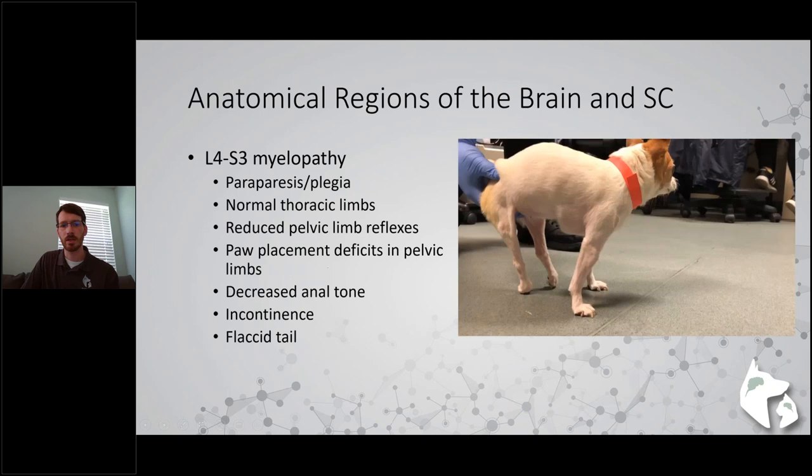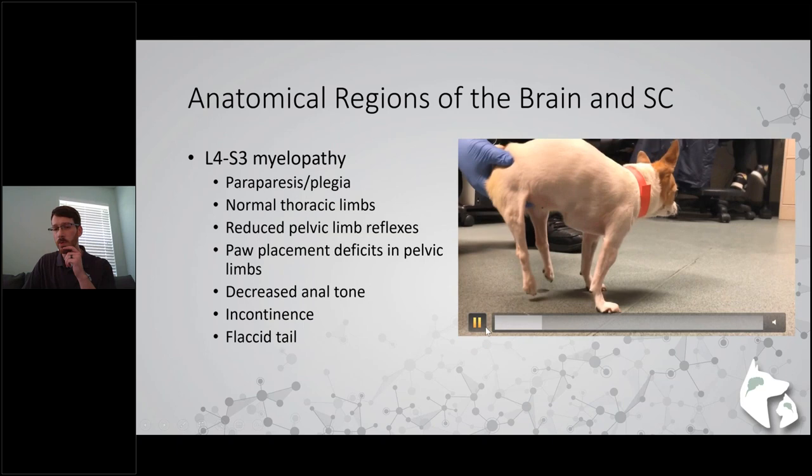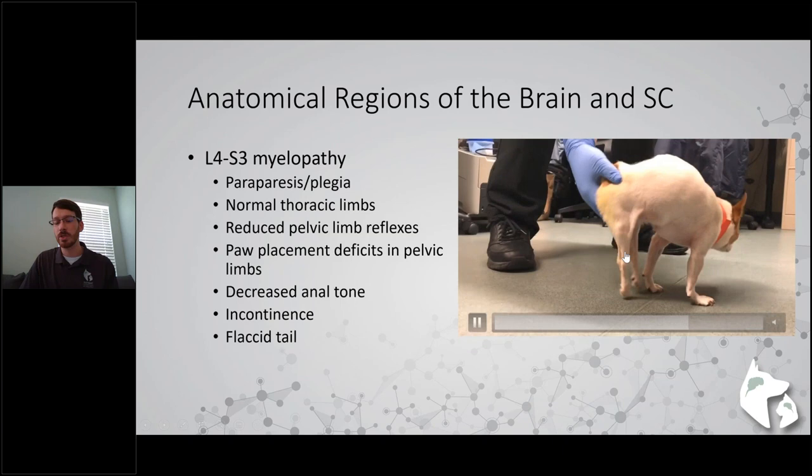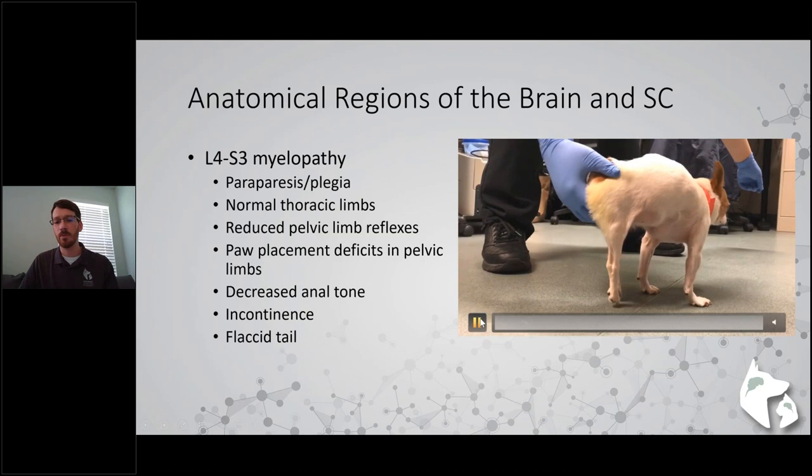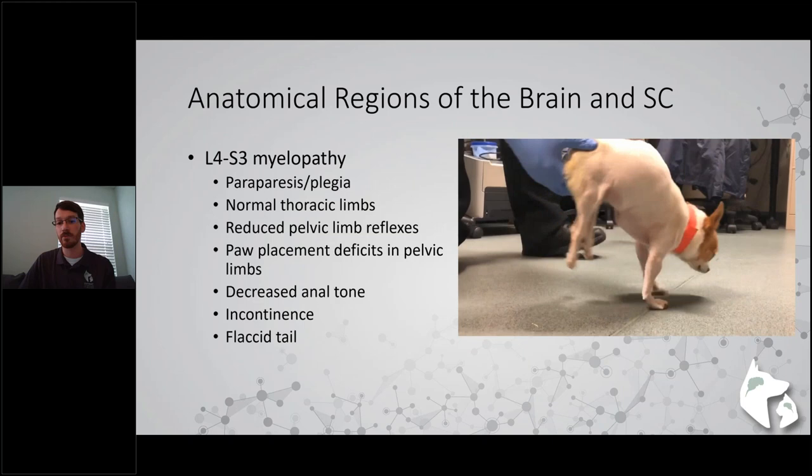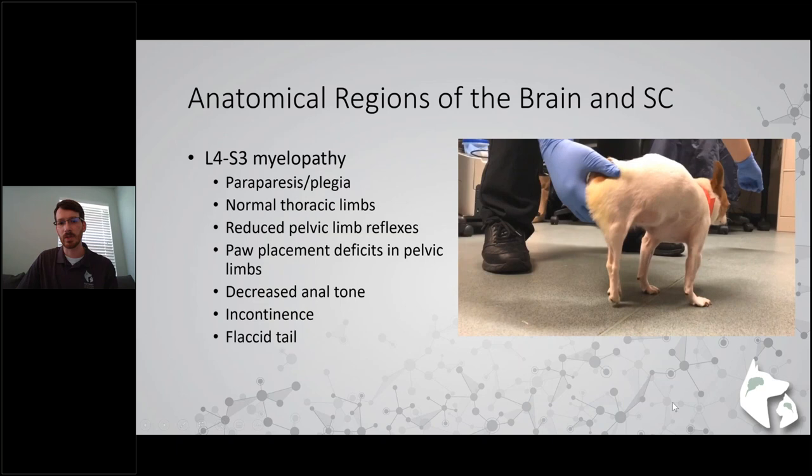For an L4-S3 example, front legs should be normal. This patient is reluctant to move forward but can do so and support itself on its front legs. However, the back legs are very flaccid with no definitive movement. When setting the patient down, you can see those legs knuckle over - there's a lack of proprioception or awareness of where those feet are.